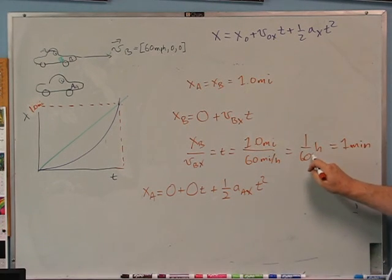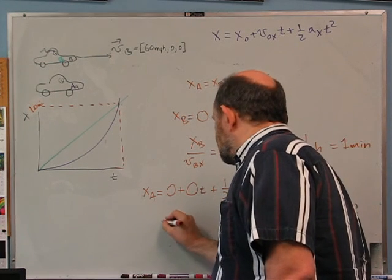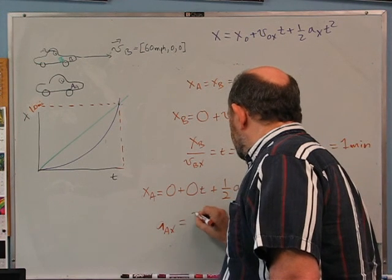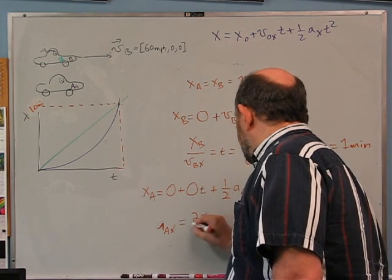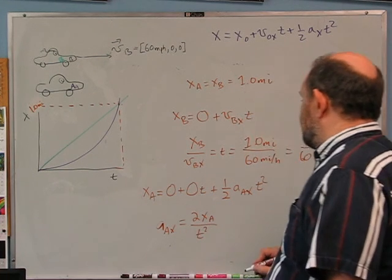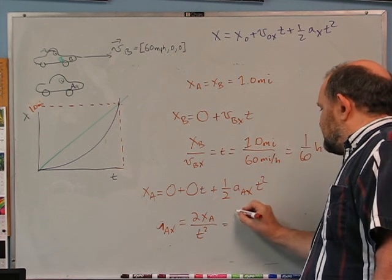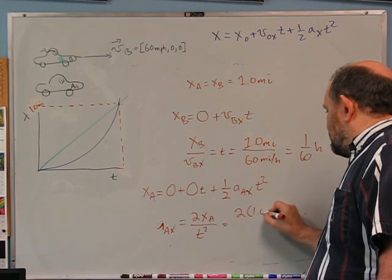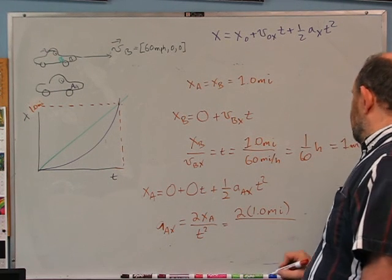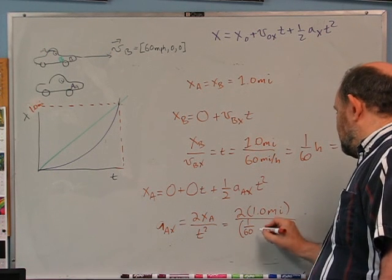Now I need car A to cover that same 1.0 mile in 1 minute. Starting from rest: xa = ½·aAx·t². Solving for aAx = 2·xa / t².